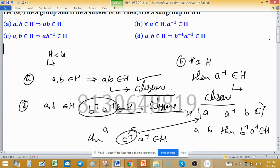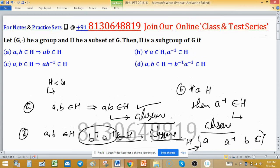So closure property is partially satisfied here, but not for all elements. So the only correct option is C.